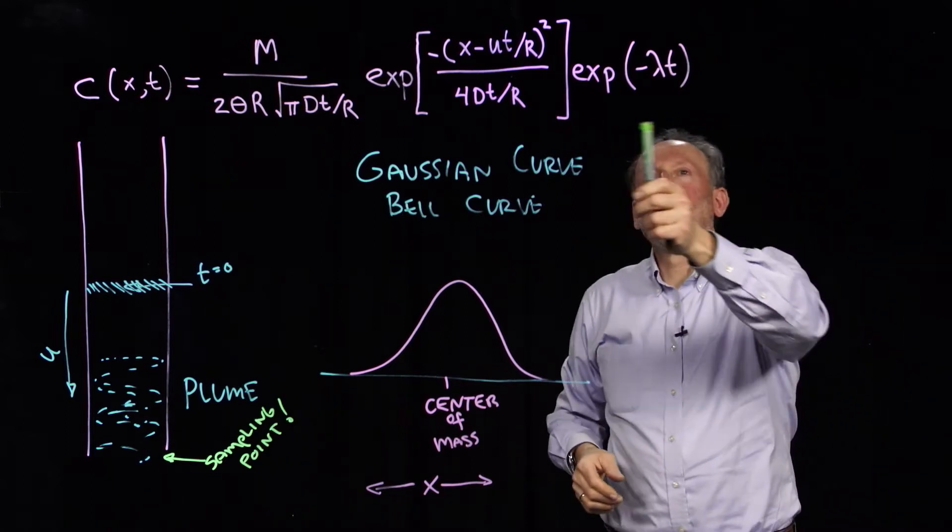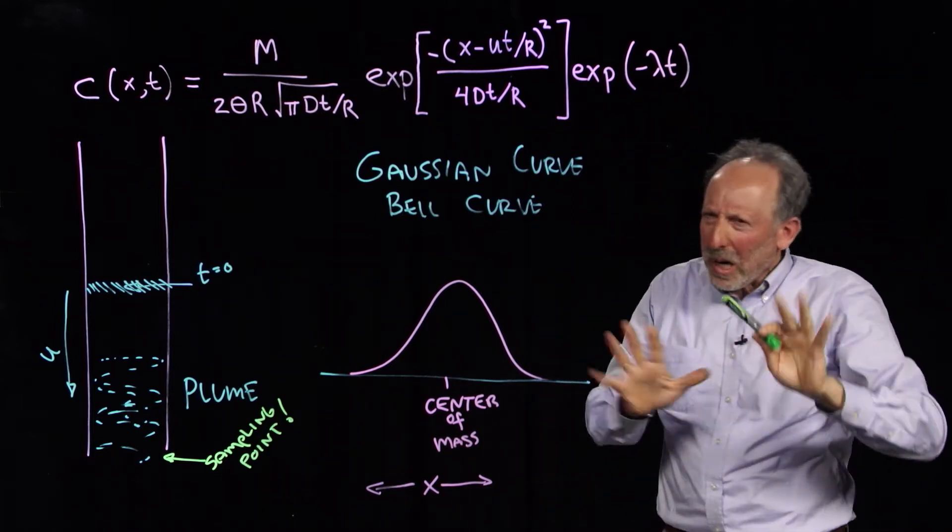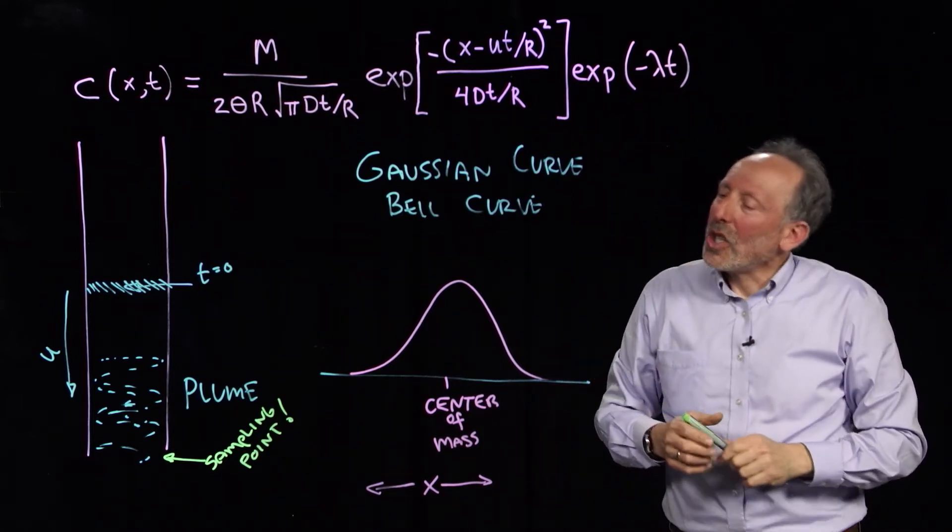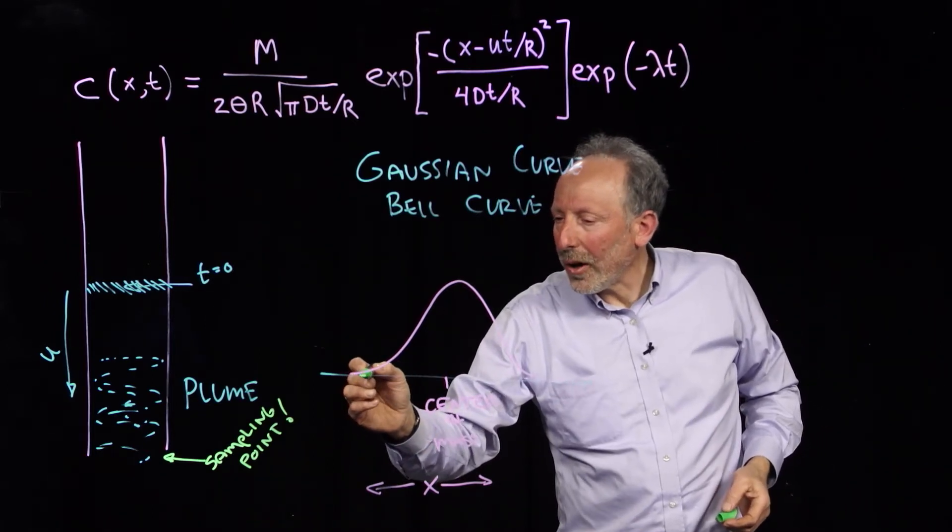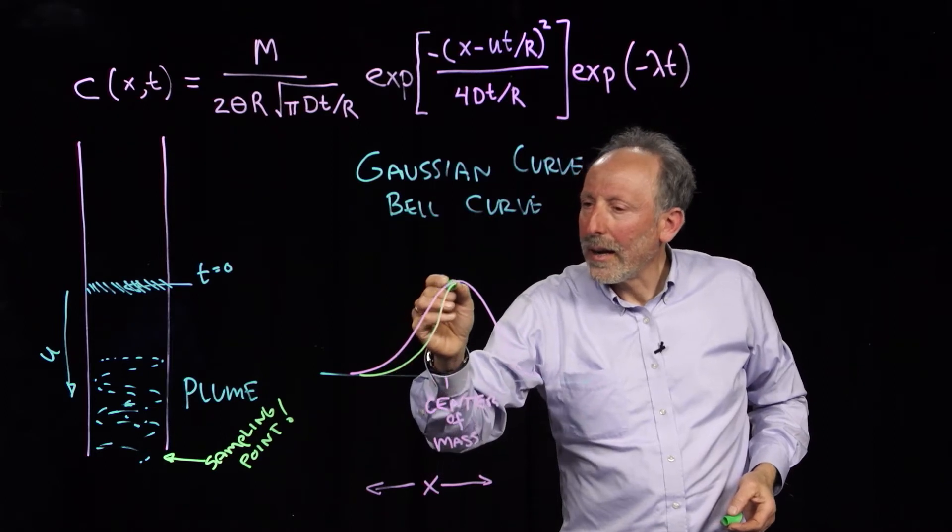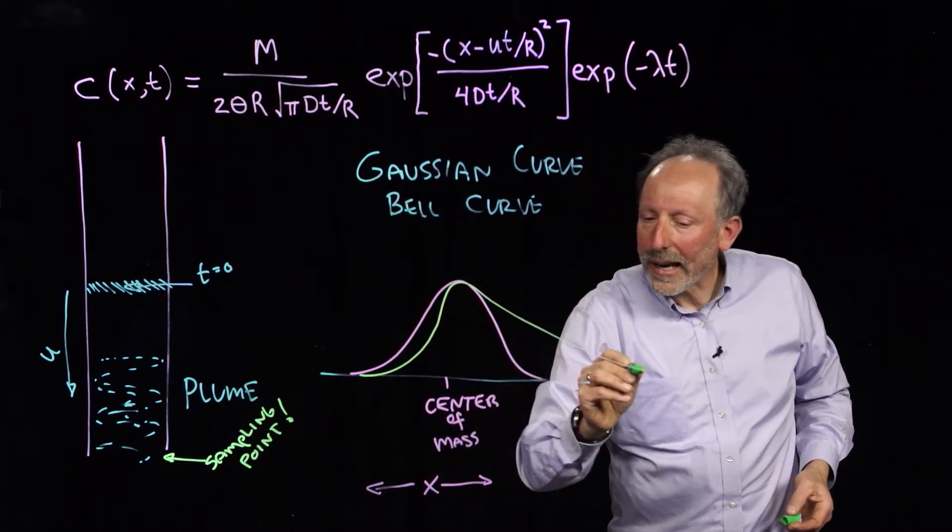We'll talk about degradation in a moment. This is degradation. We're not gonna deal with degradation quite yet. So what happens in time is that the curve will start off abruptly high, and then it'll go out and tail off.